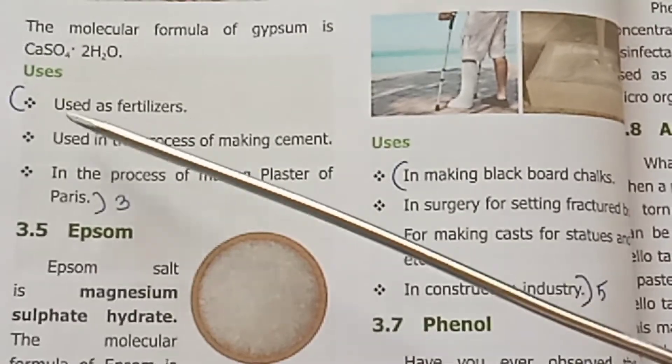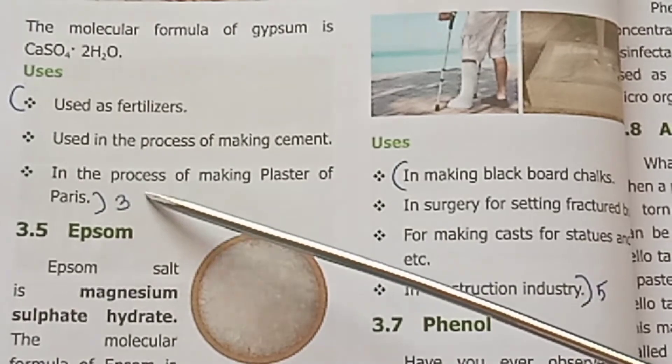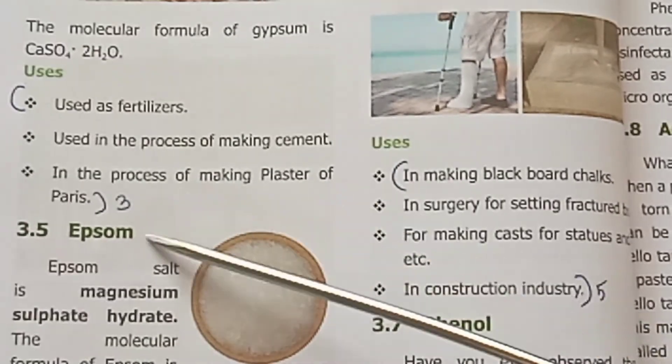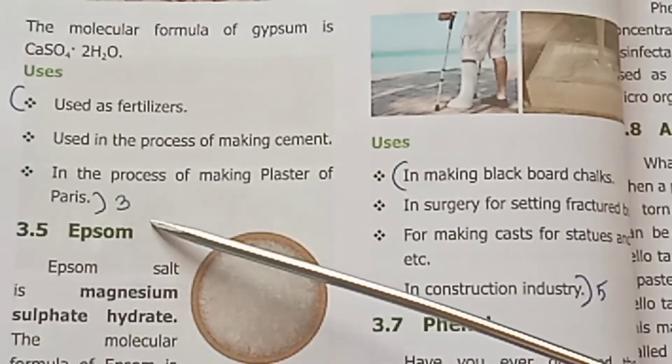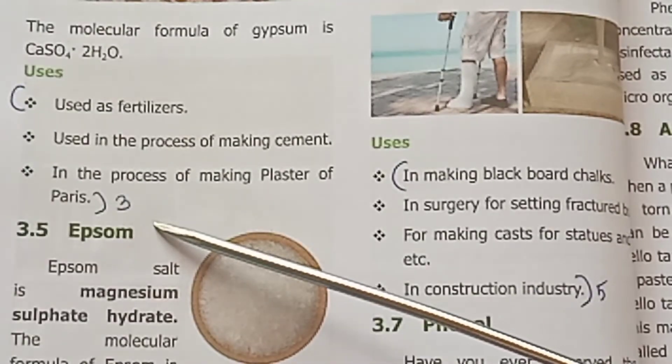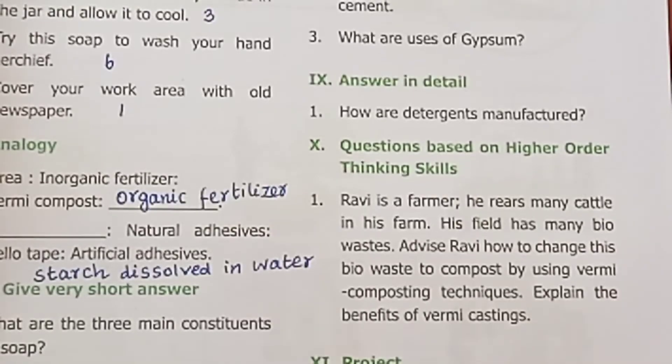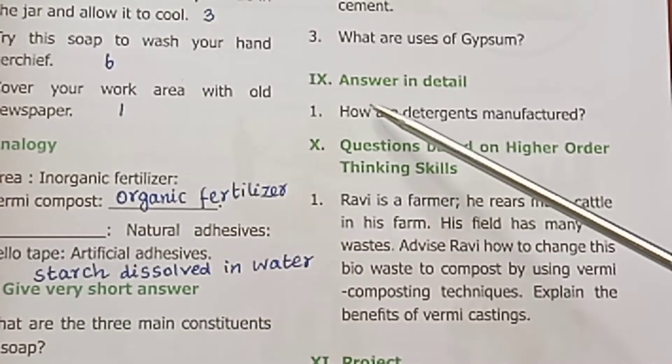3. What are the uses of gypsum? (See page 40.) Gypsum is used in the process of making plaster of Paris.